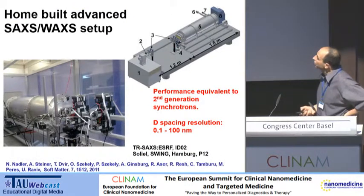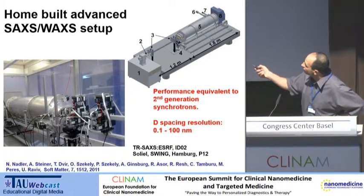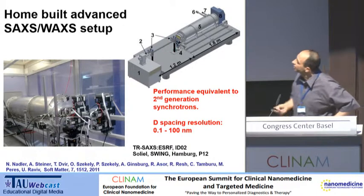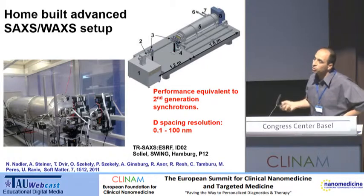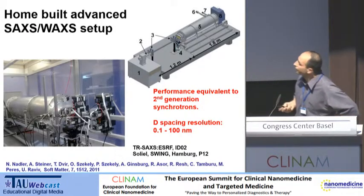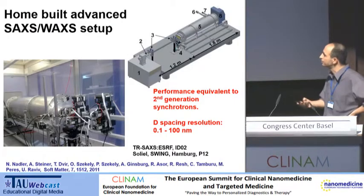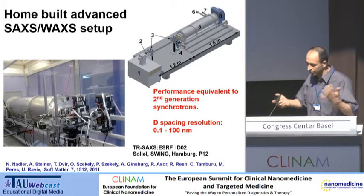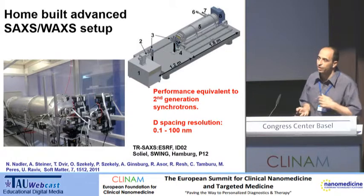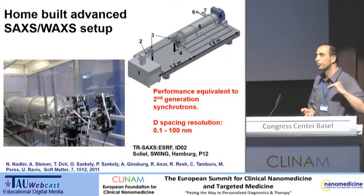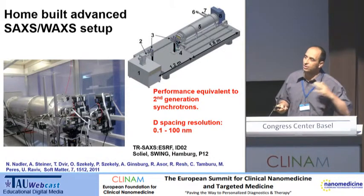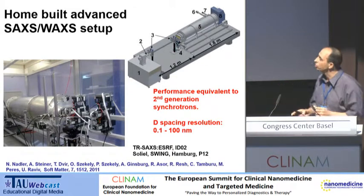This is what the setup looks like at home. We have an in-house setup where you have the source, the flight path the X-ray goes through, and at the far end the detector. To do high-resolution time-resolved experiments, we have to go to synchrotrons. The in-house setup gives more or less the performance of a second-generation synchrotron, but for high-resolution time-resolved experiments at synchrotrons you can go down to five or a few milliseconds resolution, with special resolution between one angstrom to a few hundred nanometers.